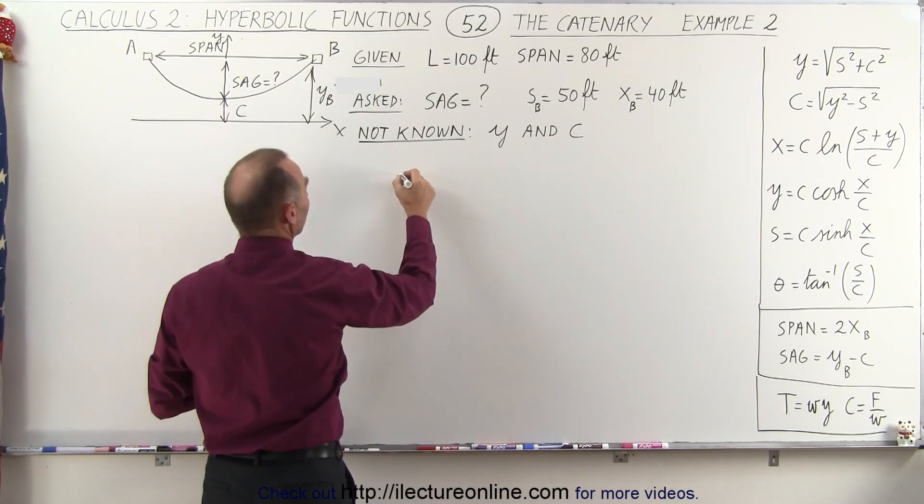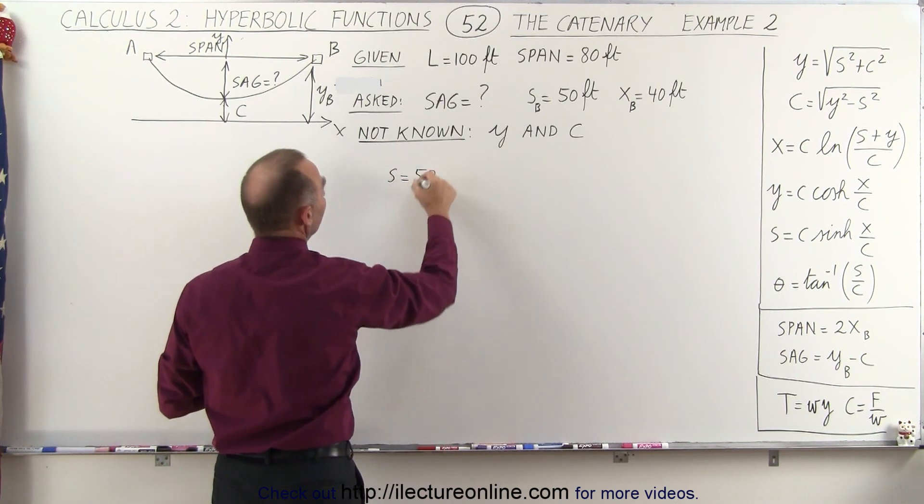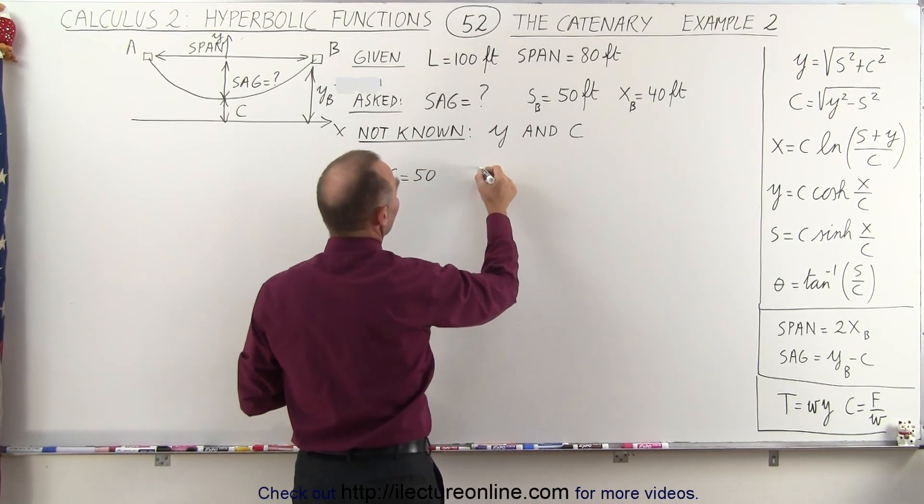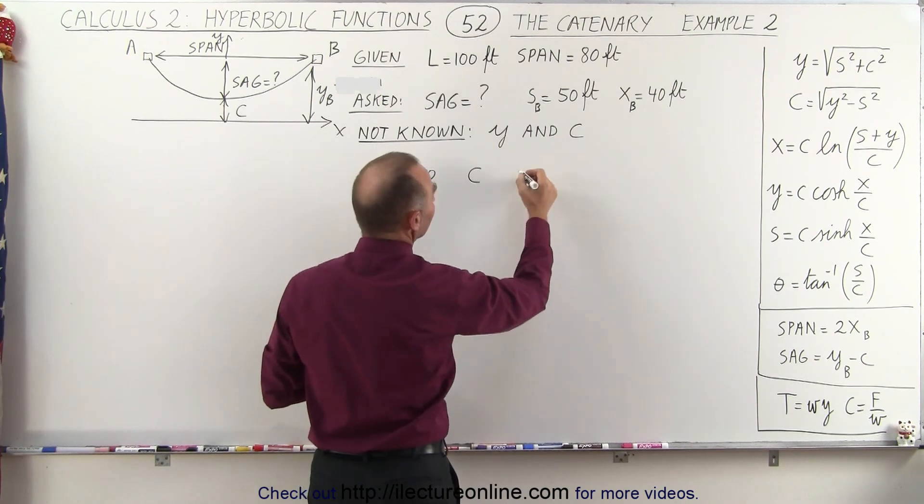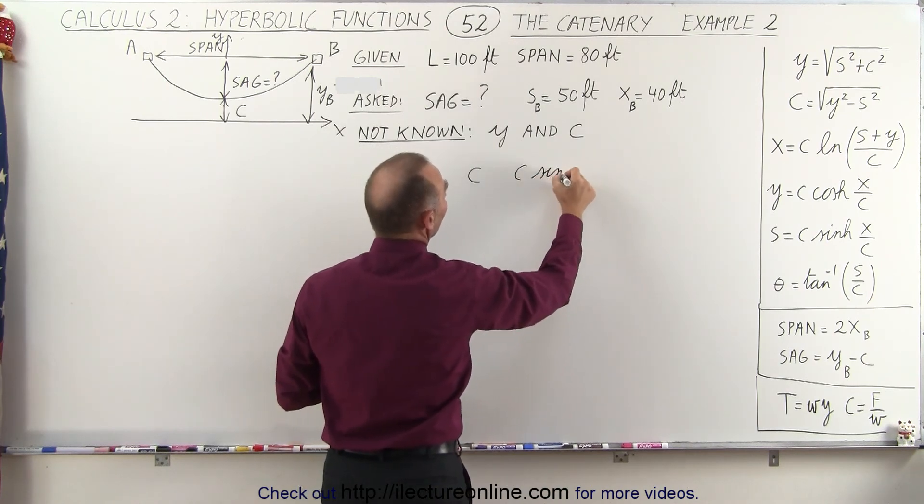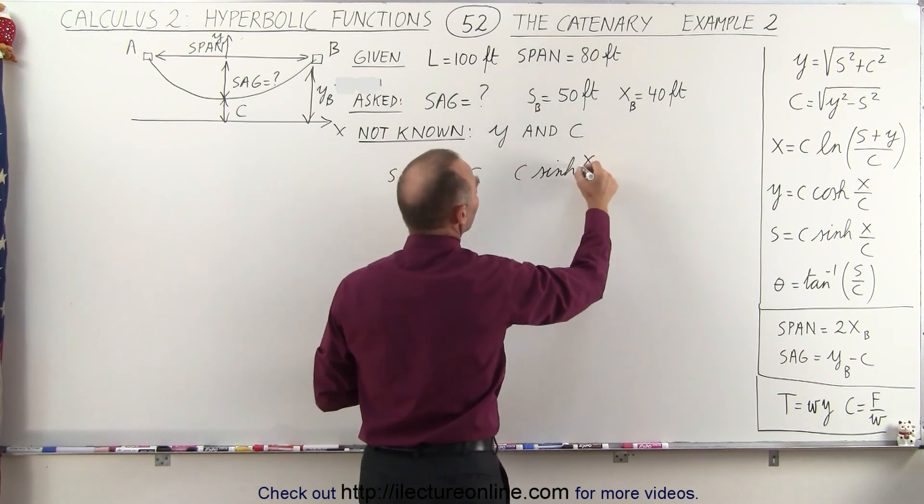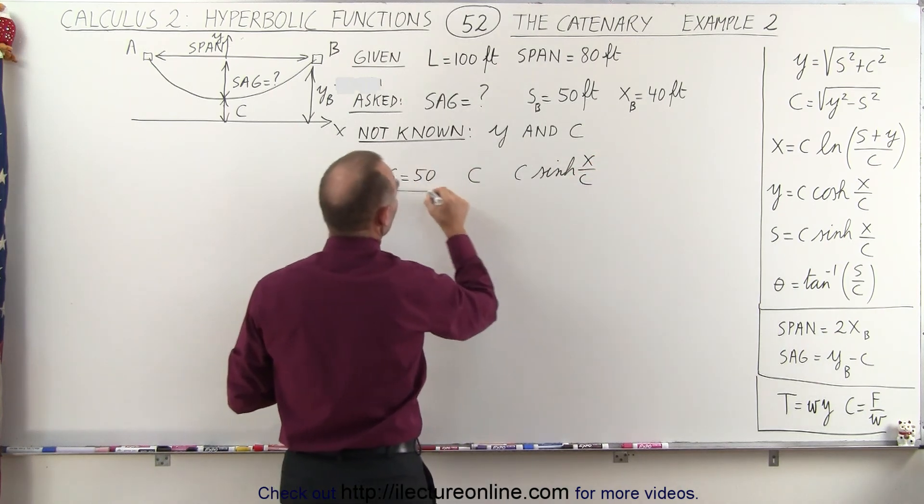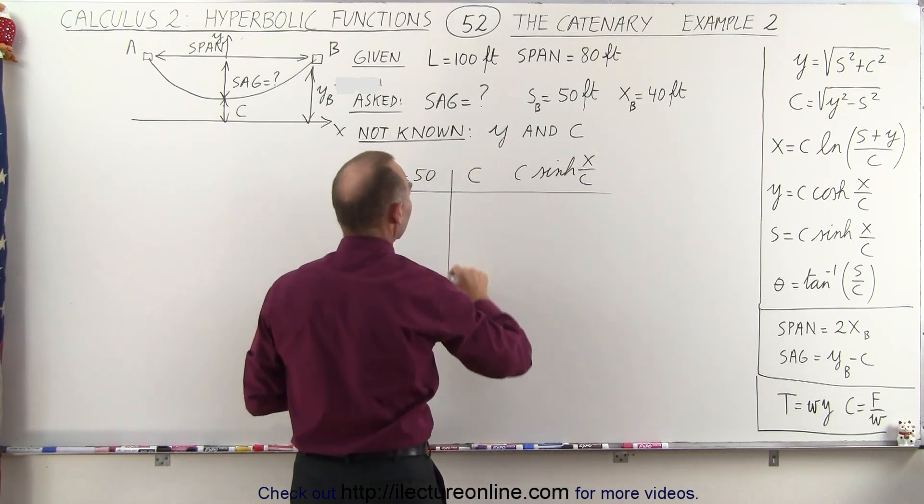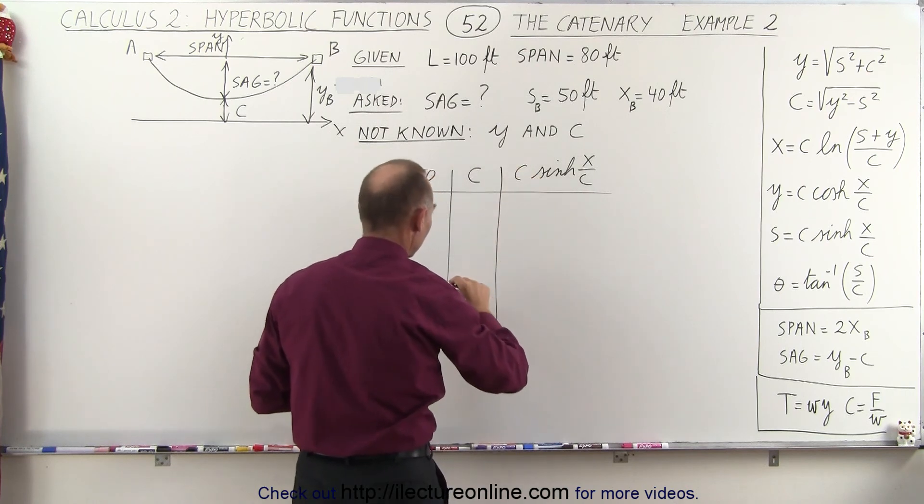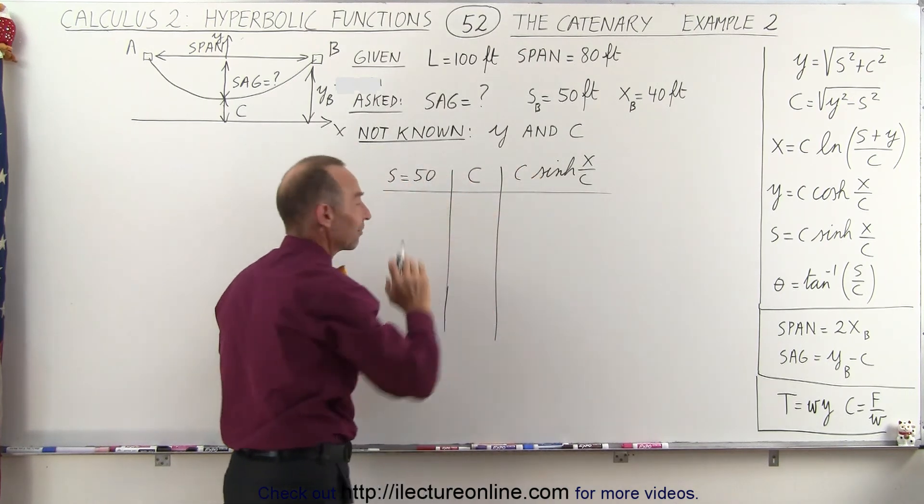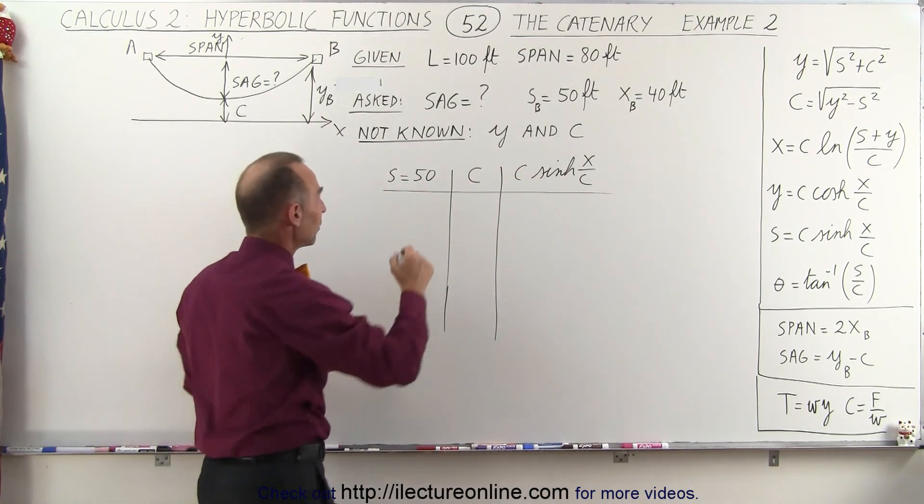So what we're going to do is realize that the result is always going to have to be 50 feet so we put in 50 feet so s equals 50 and then we're going to put in a value for c then we're going to calculate the corresponding c times the hyperbolic sine of x over c and if we didn't pick the right c we'll pick a different c and eventually we'll see that it will converge to the correct value. So we know that we need to get 50.